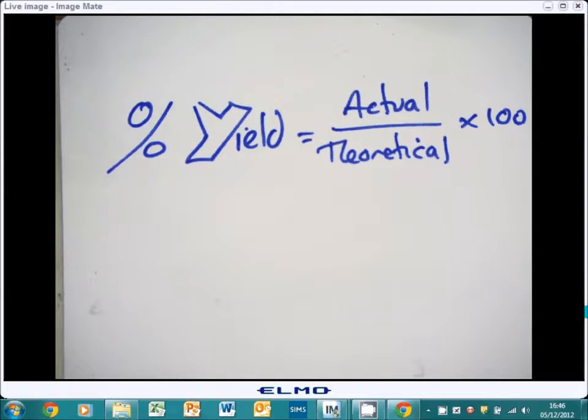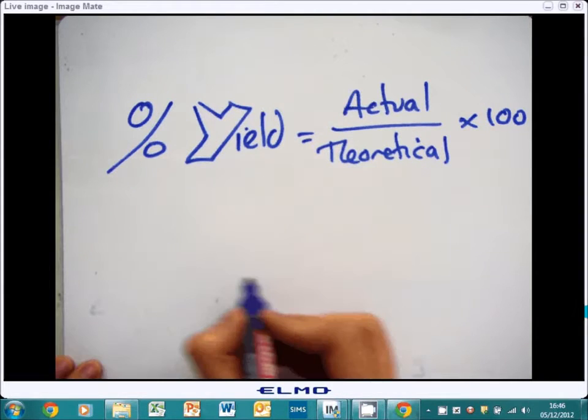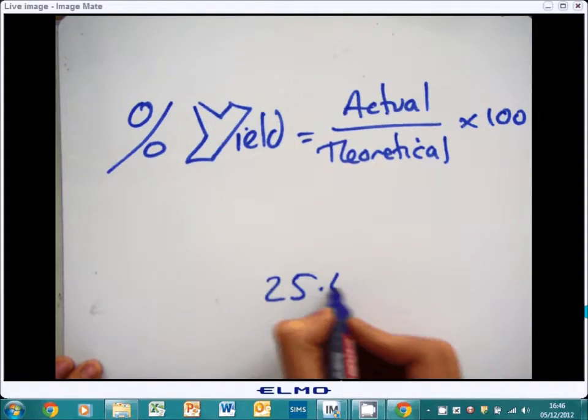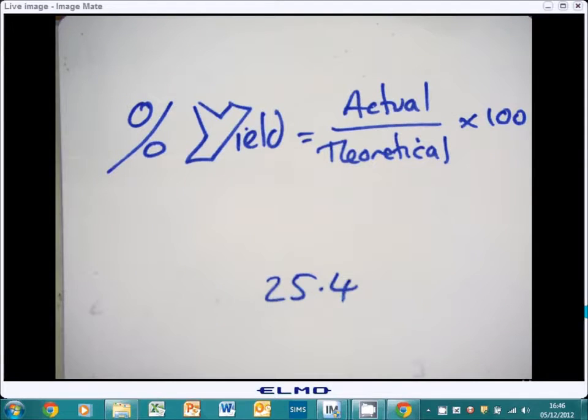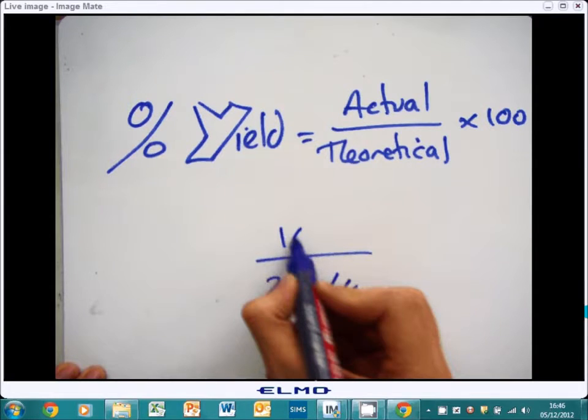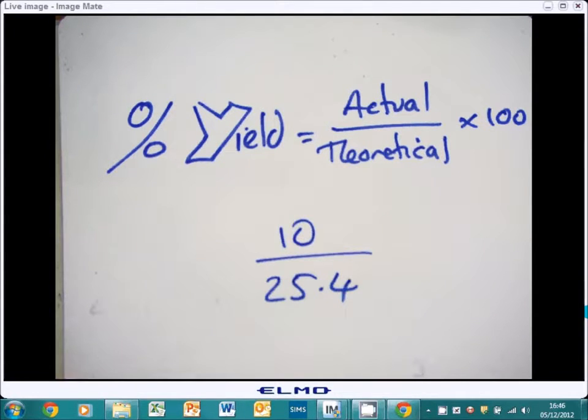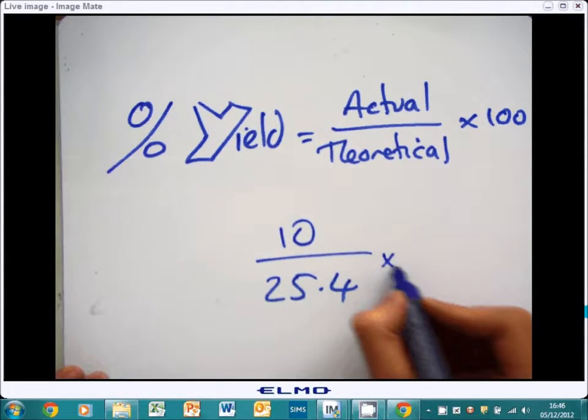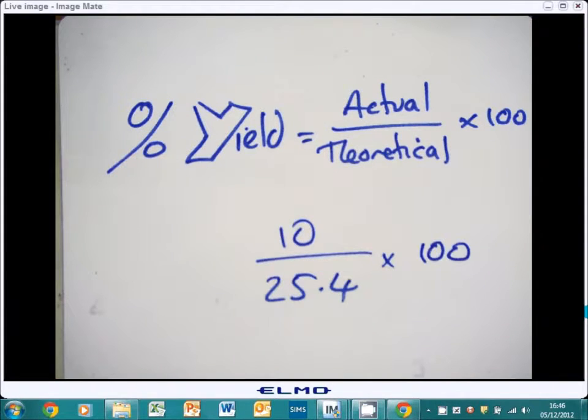To do that, you use this equation. The actual yield divided by the theoretical yield times by 100. So let's go back to that previous example. Let's say we had 25.4 grams, which is what we should have got. Let's say we only got 10 grams out. What we do is we divide 10 by 25.4 and times by 100, which would give you 39.4%, which is a very, very low yield.